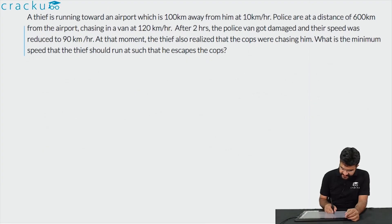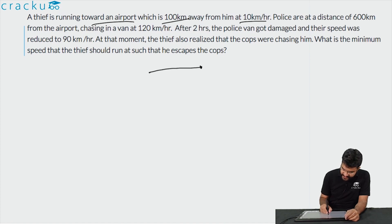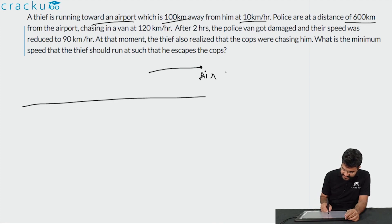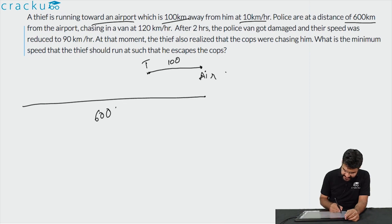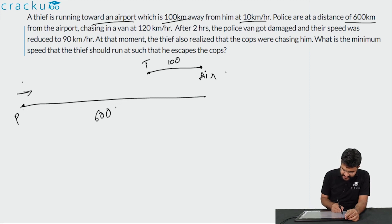In this question, a thief is running towards an airport which is 100 kilometres away at 10 km/h. Police are 600 kilometres away from the airport and are chasing in a van at 120 km/h. After 2 hours, the police van got damaged and their speed was reduced to 90 km/h.